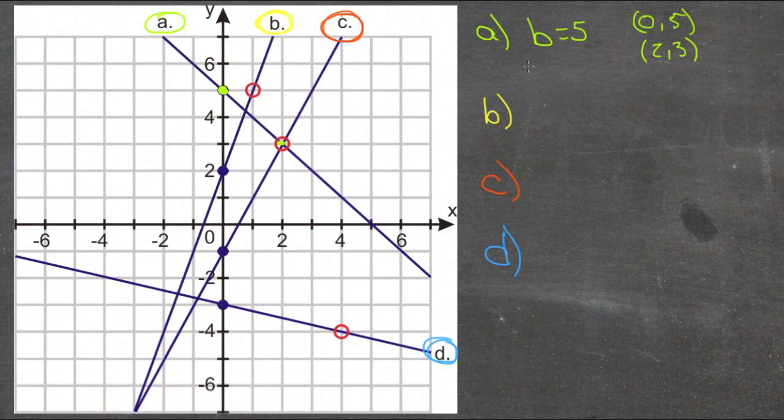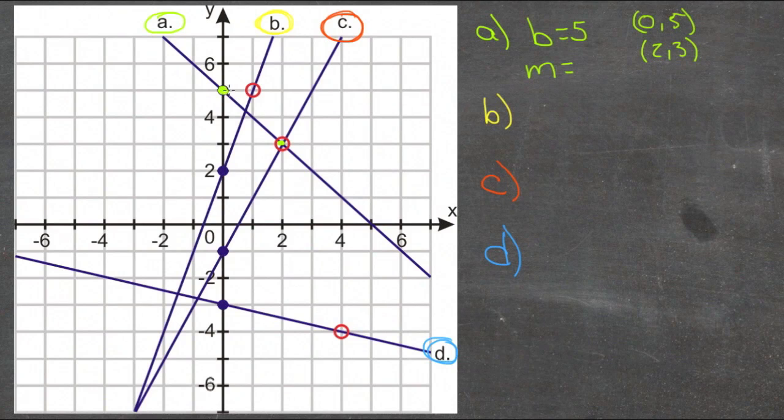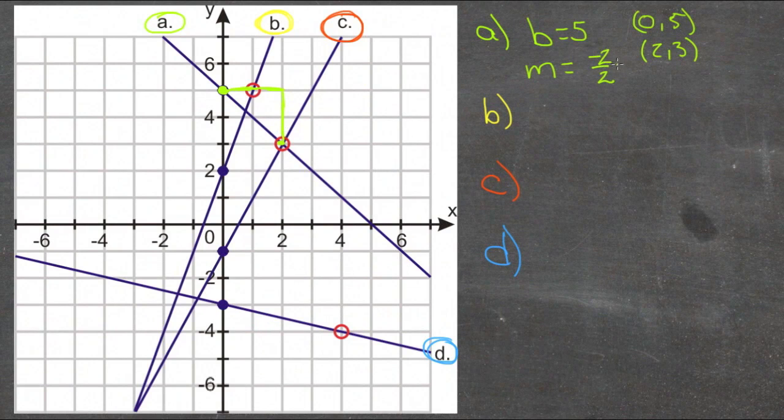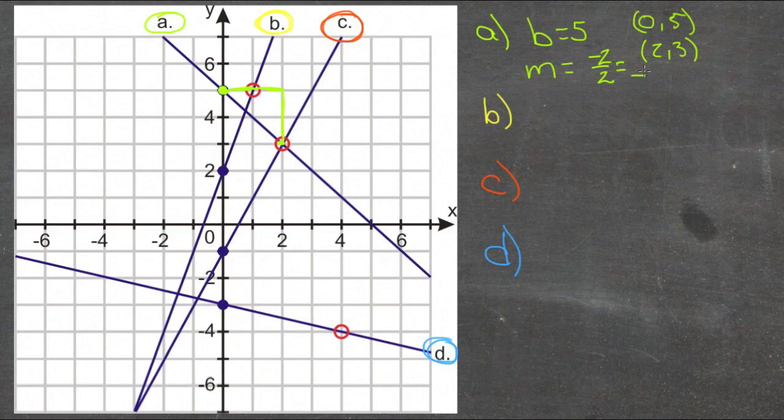Now we can identify the slope, m, with the rise over run, by identifying either going from the points themselves or from the graph. For this one, let's use the graph. Let's say that we're looking to see that we're running here from 1 to 2 points. So we're starting at 0, going over to 2. So our run is 2. And our rise is negative 3. So we have a rise of negative 3. And that reduces to negative 3/2. Got a little crowded there. Where m is negative 3/2.